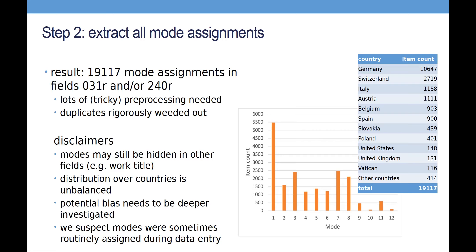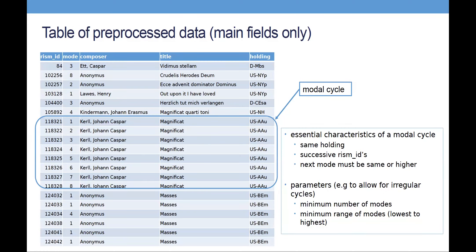After pre-processing, the data includes the RISM ID, the mode, the composer, the title, the holding, and a number of other fields. It's really easy to spot the modal cycle here, which is actually a Magnificat cycle by Johann Caspar Carroll, surviving in a US source. How do we know this is a modal cycle? First, because the modes go up from 1 to 8. Another important characteristic is that the RISM IDs also go up step by step. And finally, a modal cycle must be in one holding — these three things are the essential conditions.